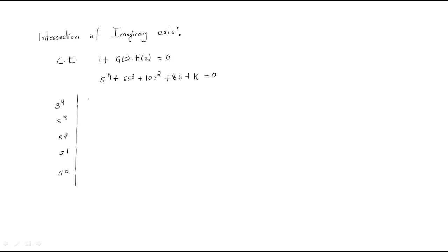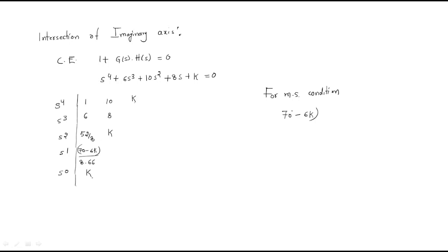Using the Routh array with entries 1, 6, 10, 8, and K, we compute the elements. The s^1 row gives 70 minus 6K divided by 8.66. For marginal stability, this row equals zero, so 70 minus 6K equals zero, giving K equals 70 over 6, which is 11.66.